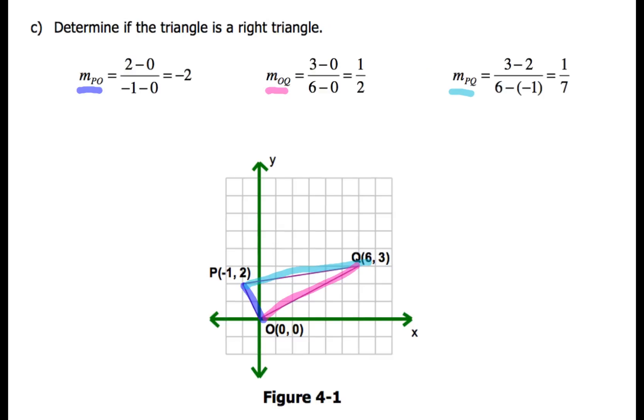So find the slope of each one of those three pieces and then let's compare our slopes and see what we come up with. Well, how'd you do? Hopefully for the slope of PO you came up with negative two. For the slope of OQ, you got one half after you're done reducing. And for the slope of PQ, you came up with one seventh. If you didn't, go back and double check your arithmetic.